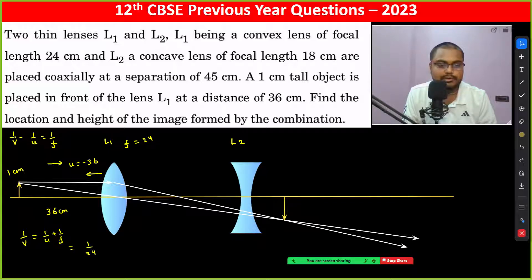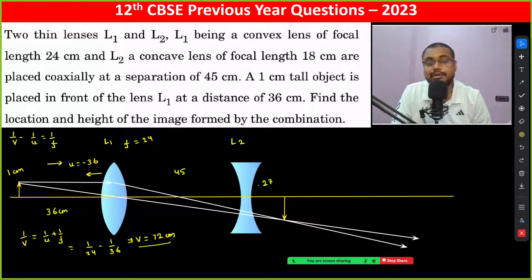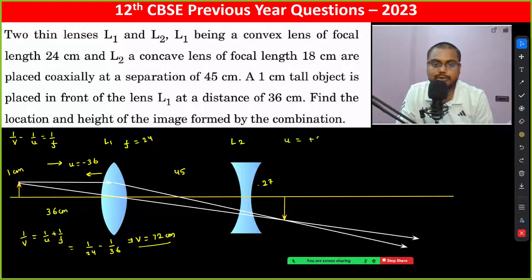This gives 1/24 minus 1/36, so v becomes 72 centimeters. The separation between the lenses is 45 centimeters, so the image is formed 27 centimeters to the right of the concave lens. For the concave lens, u becomes plus 27 centimeters, since it is in the same direction as the incident light.